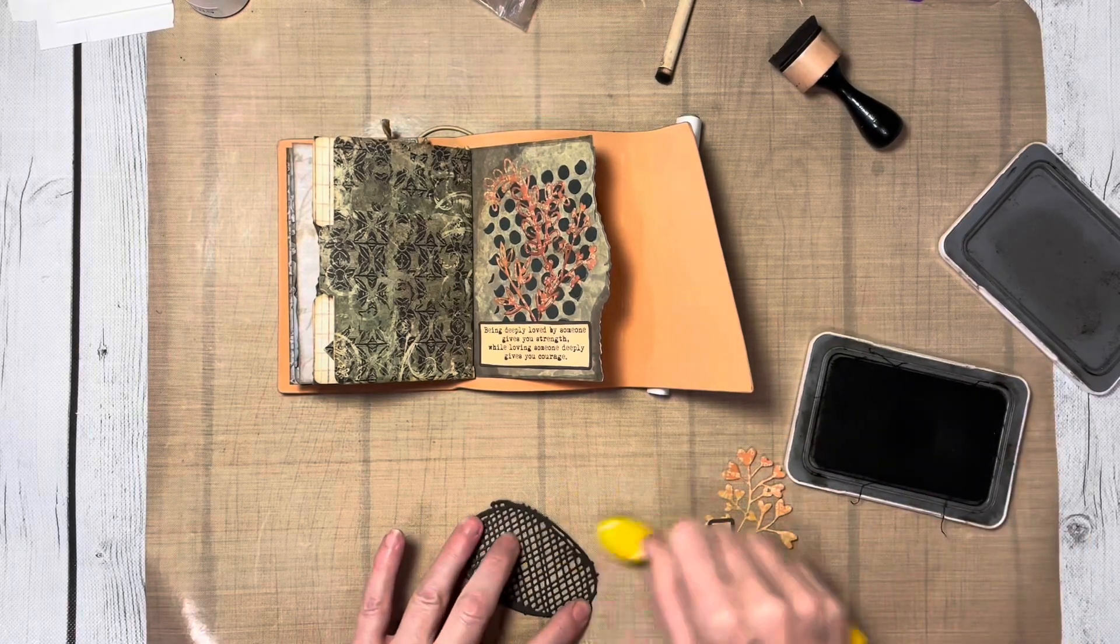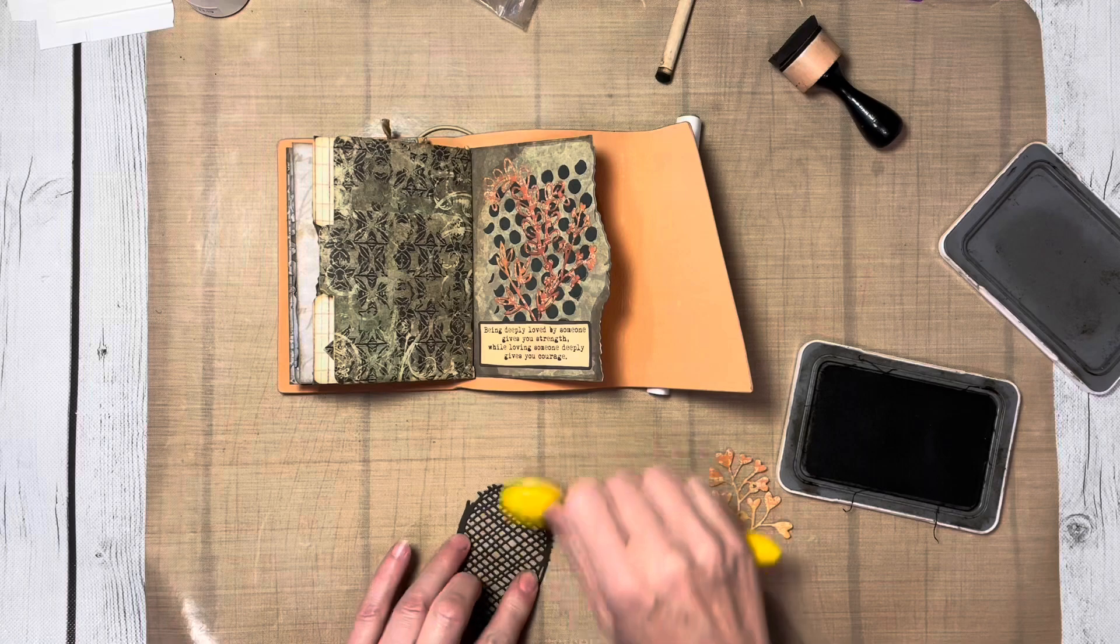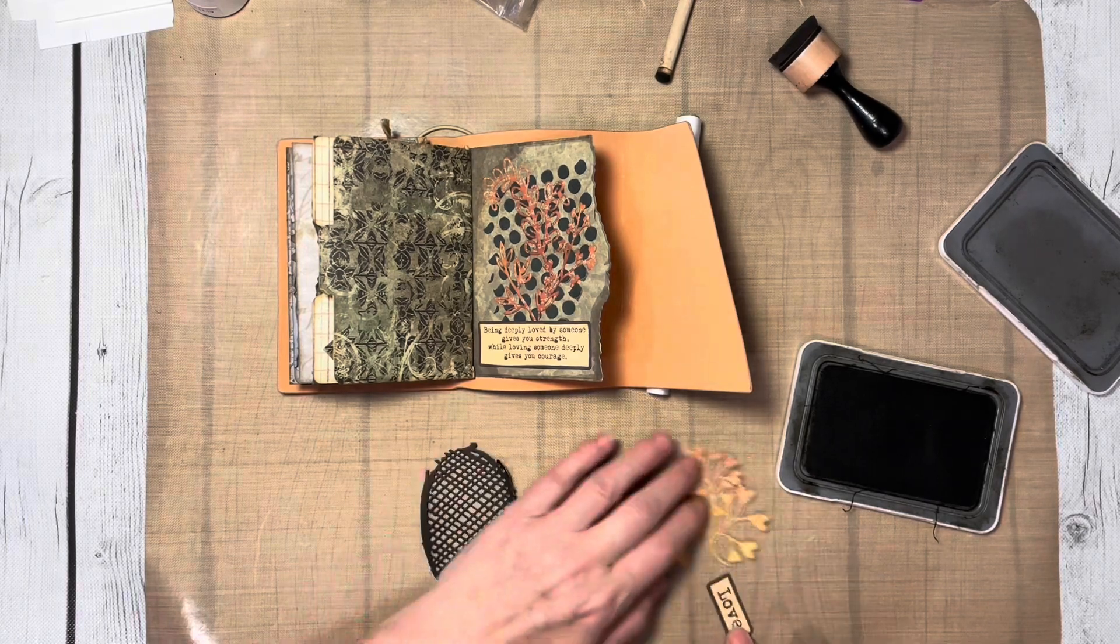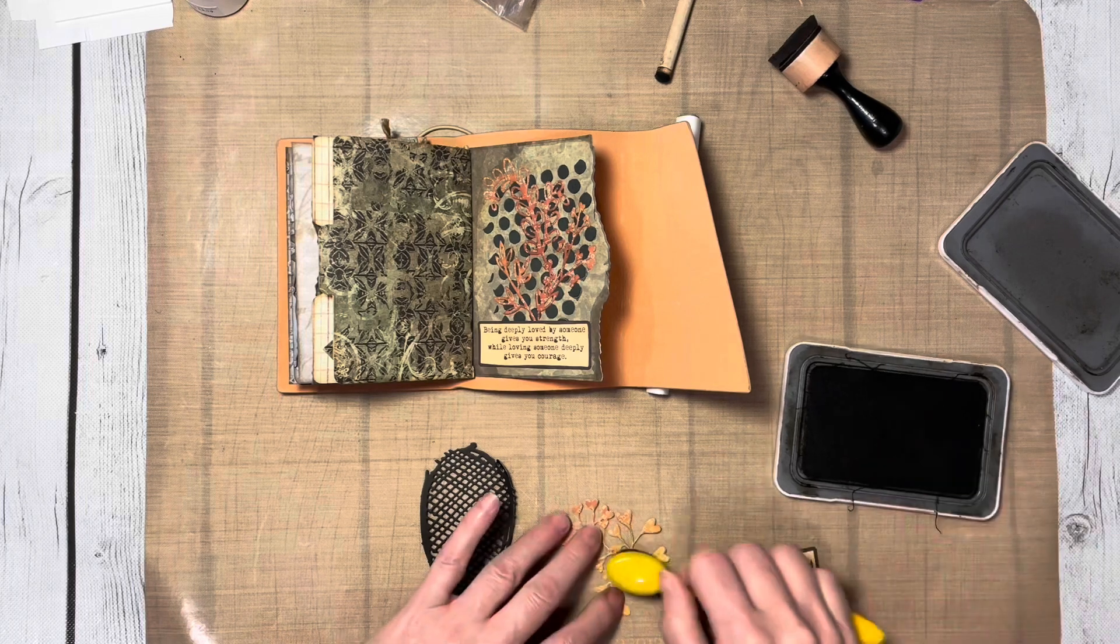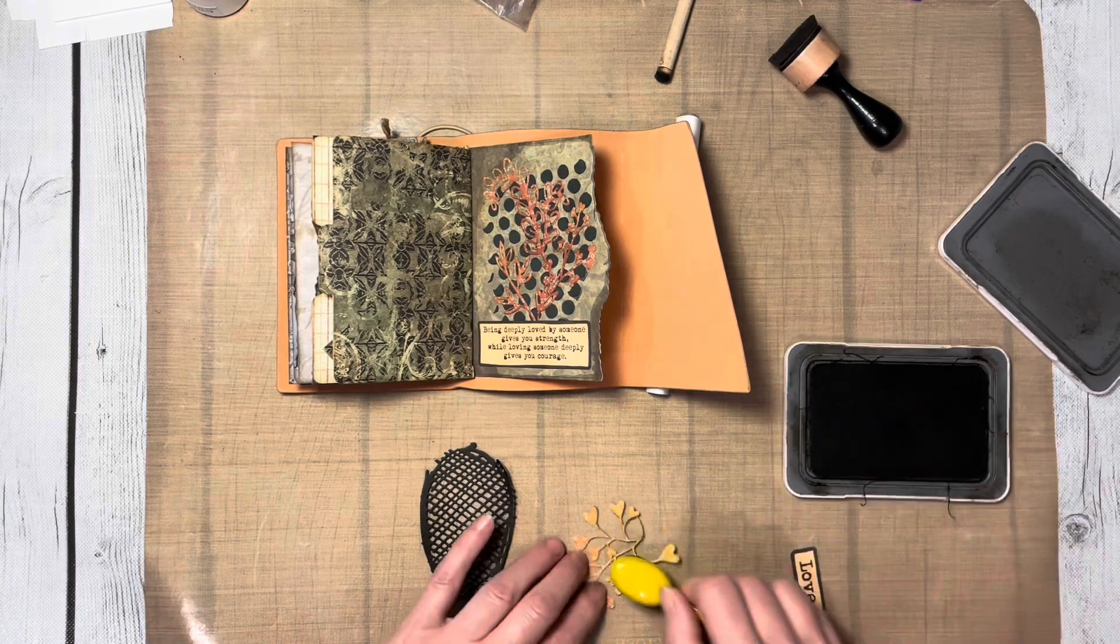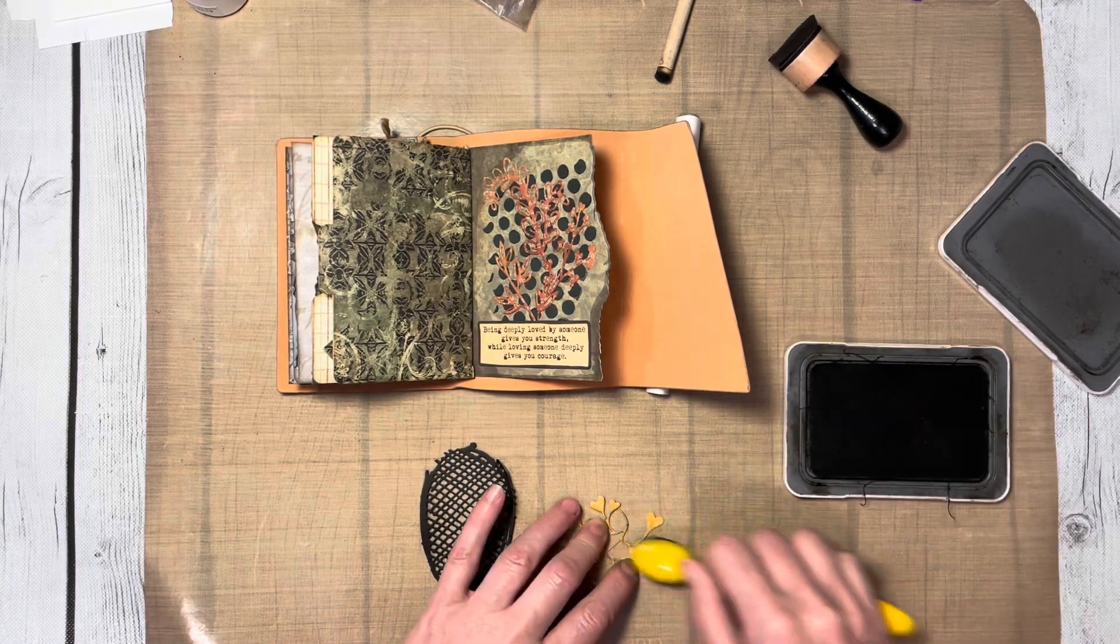I cut this little mesh out of the Ticket to Fly Free set number 2033, and then I cut the heart branch piece from Planner Essentials number 25, the double heart insert.